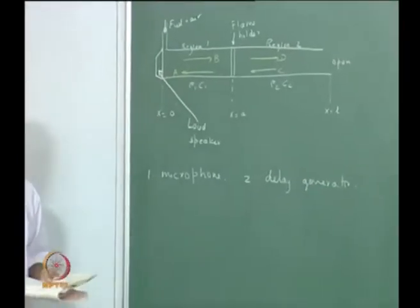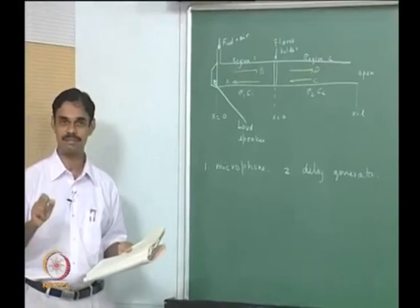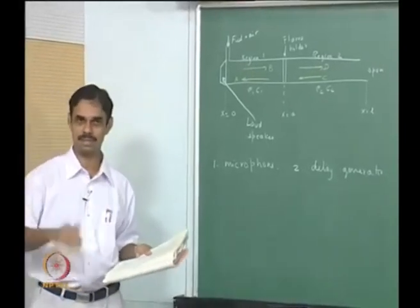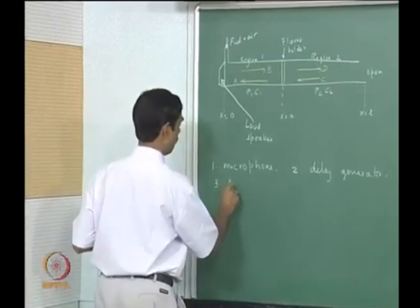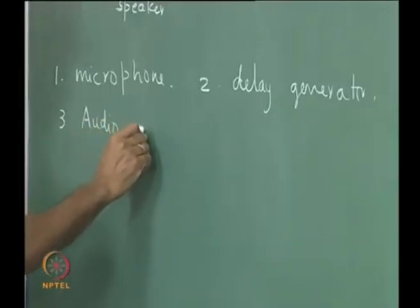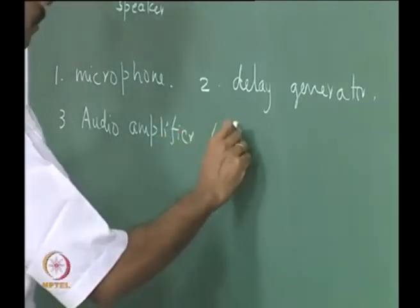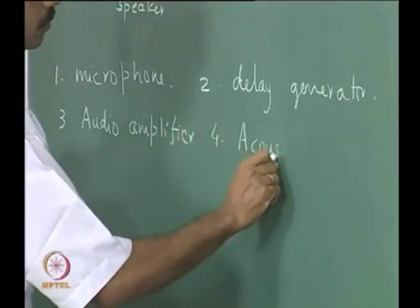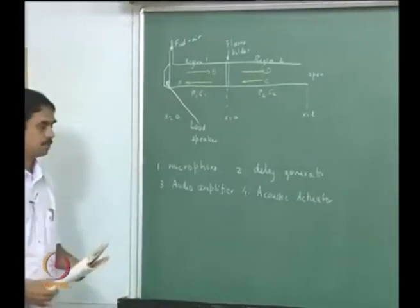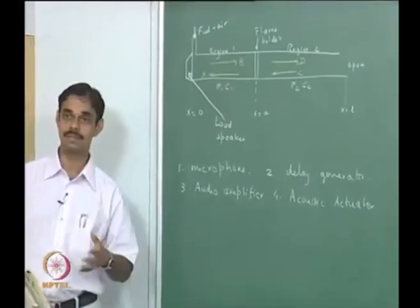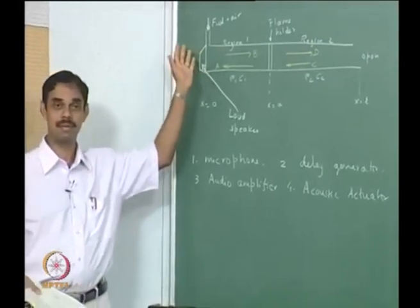As pointed out, we need to be able to adjust the time at which the sound comes in — the phase of the sound. We are having continuous sound waves, so it is more like adjusting the phase. We need an audio amplifier and we need an actuator. An actuator is something that will actuate and make sound. In this crude example, we can use a loudspeaker.